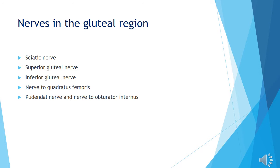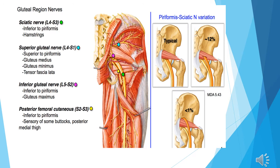Let's talk about the sciatic nerve. The sciatic nerve roots are L4, L5, S1, S2, and S3 — arising from the sacral plexus. It is the largest nerve. The sciatic nerve emerges below the piriformis muscle from the upper part of the greater sciatic foramen.